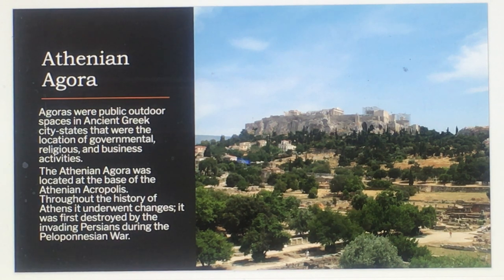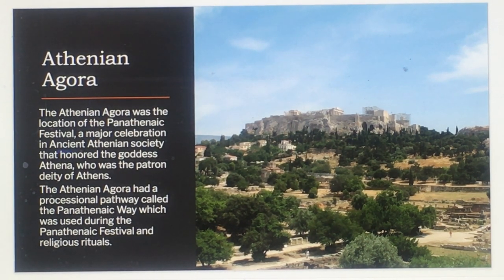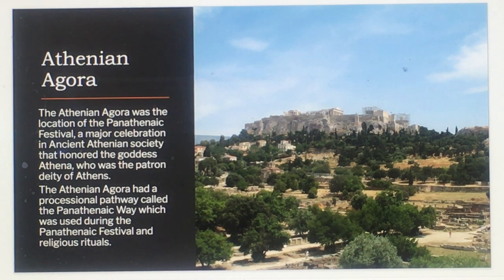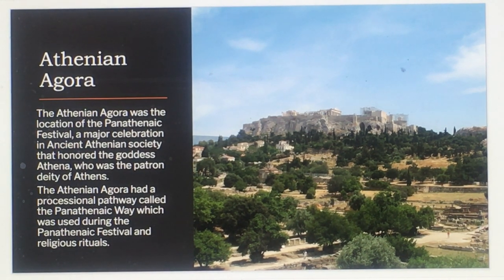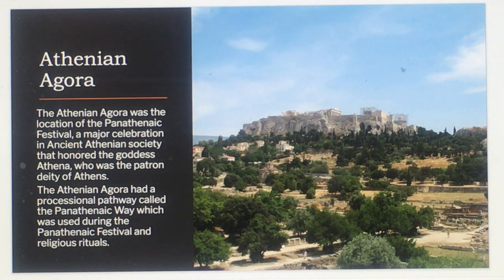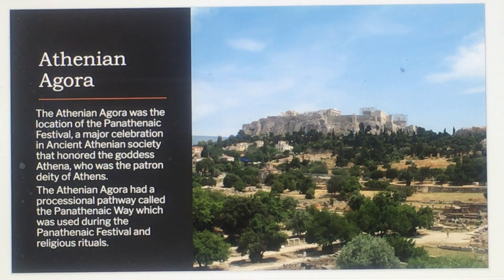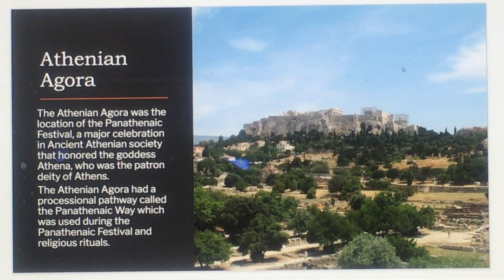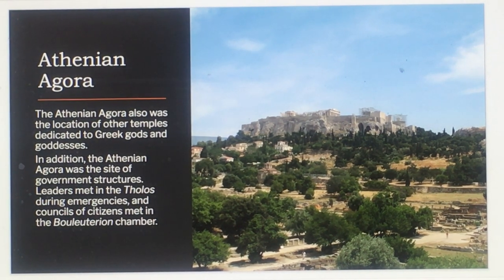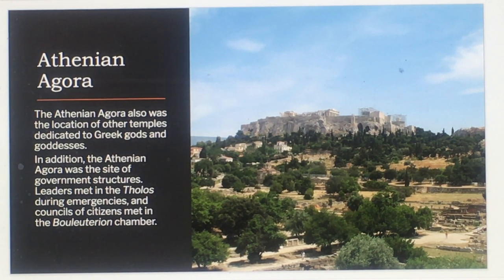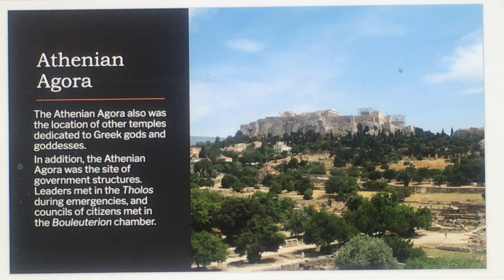Throughout the history of Athens, the Agora underwent changes. It was first destroyed by the invading Persians during the Peloponnesian War. The Athenian Agora was the location of the Panathenaic Festival, a major celebration honoring the goddess Athena, patron deity of Athens. It had a processional pathway called the Panathenaic Way, used during the festival and religious rituals. The Agora was also the location of other temples dedicated to Greek gods and goddesses, as well as governmental structures. Leaders met in the Tholos during emergencies and councils of citizens met in a dedicated chamber.